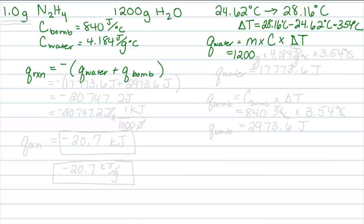My mass is 1200 grams, specific heat 4.184 joules per gram degree Celsius, and my temperature 3.54 degrees Celsius. I know I set this problem up right because my units for mass cancel out, my units for temperature cancel out. All I'm left with is joules, which is an appropriate energy unit.